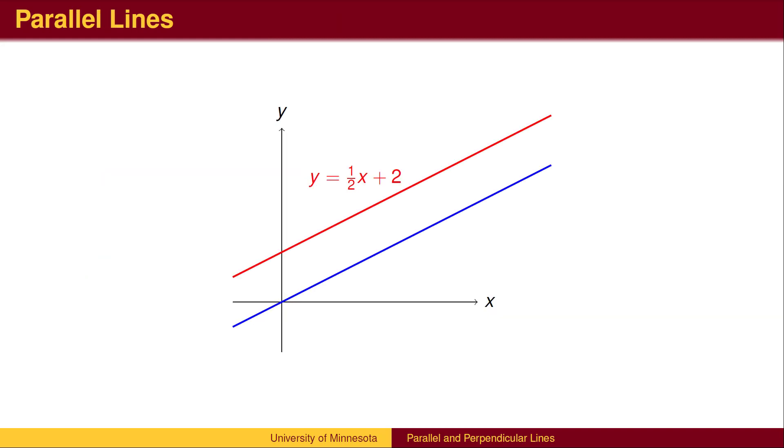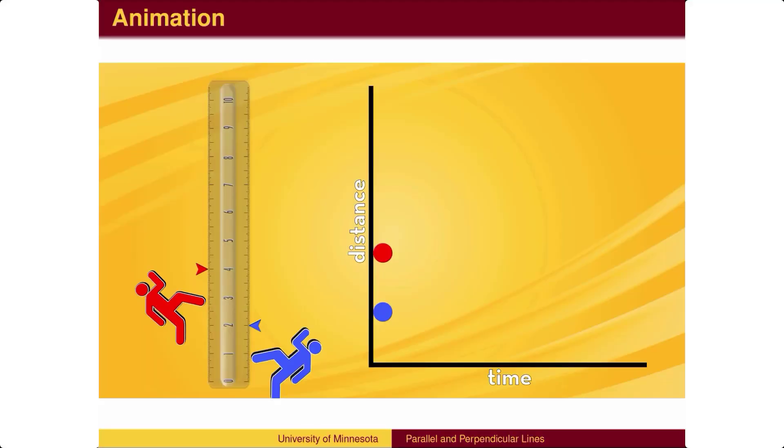Suppose we are given the equation of a line, for example, y equals 1 half x plus 2, and we wish to find the equation of a line parallel to it. What is the slope of the lower line? Think of this as a race between two competitors up the y-axis, with time measured on the horizontal axis.